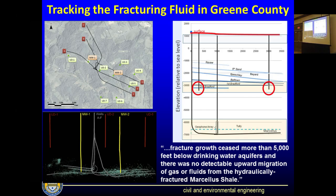The first question people were asking is: is this fracking fluid going to contaminate our groundwater? The DOE did a fantastic job in Greene County, where they monitored six wells being drilled, along with some conventional upper Devonian wells in the Bradford formation and a couple of monitoring wells. The basic conclusion was that fracture growth during hydraulic fracturing stopped more than 5,000 feet below the drinking water wells, and there was no evidence of any upward migration of gas or fluids from the hydraulically fractured Marcellus shale well.